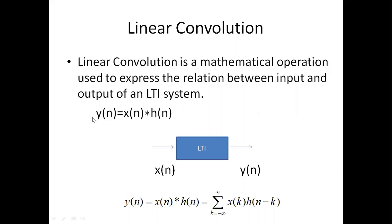Y of n is the output of an LTI system, which is equal to the convolution of X of n, the input, and H of n, the impulse response of the LTI system. The formula is: Y(n) = summation from k equals minus infinity to infinity of X(k) times H(n minus k).